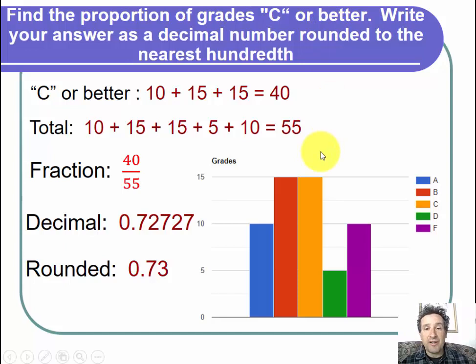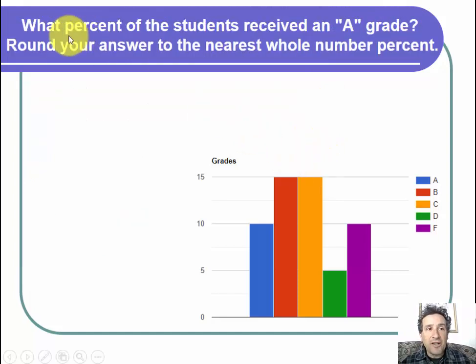Now let's look at the final question. What percent of the students received an A grade? Round your answer to the nearest whole number percent. So we start out with a fraction just like we've done before. We look at the A's. We see there were 10 A's.